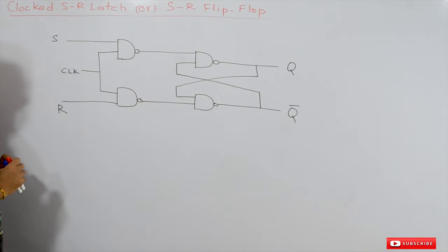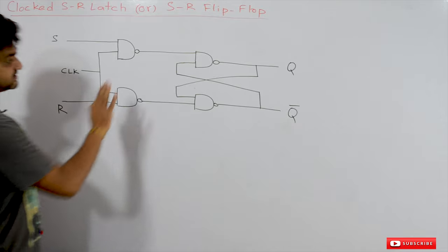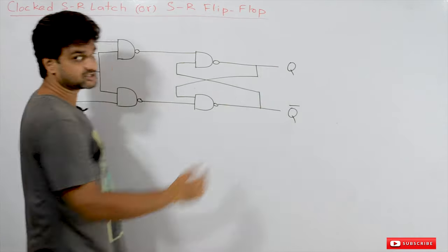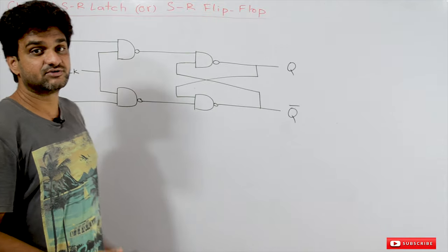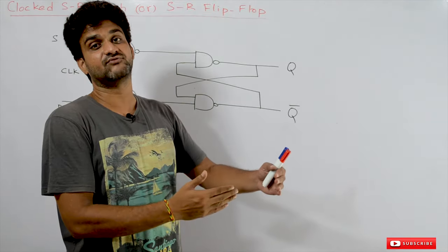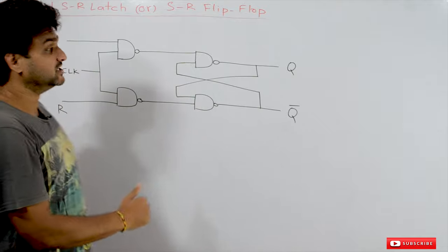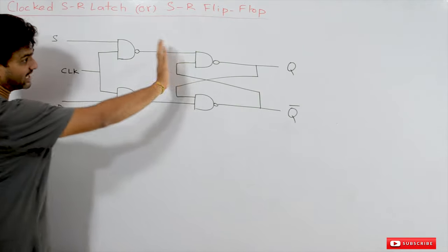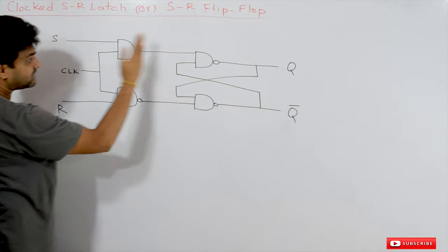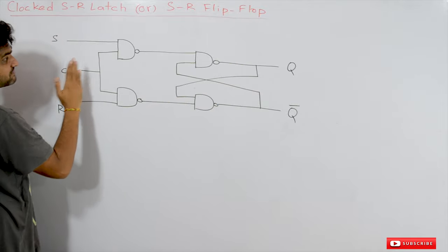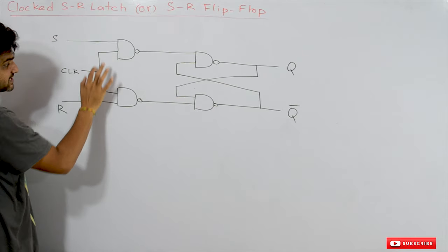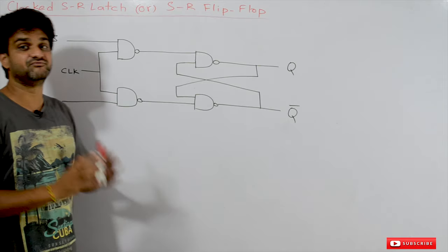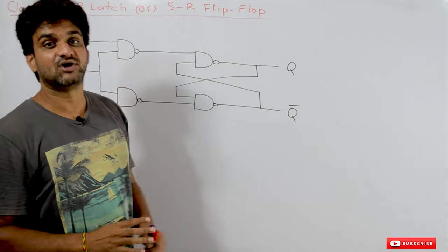This is the circuit diagram for the SR flip-flop. This part of the SR flip-flop has already been seen in our previous video, where we saw how to construct an SR flip-flop using NAND gates. To this SR latch using NAND gates, we have added an extra part with an extra input called clock. So what is this clock, and why do we need a clock in flip-flop circuits?